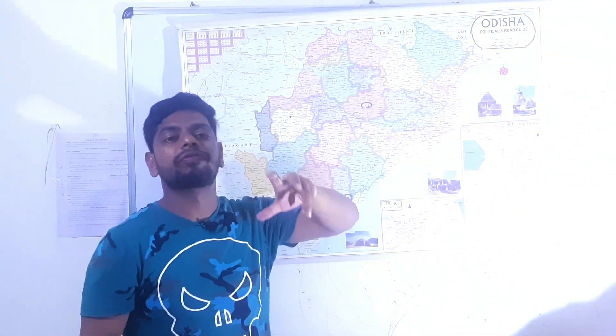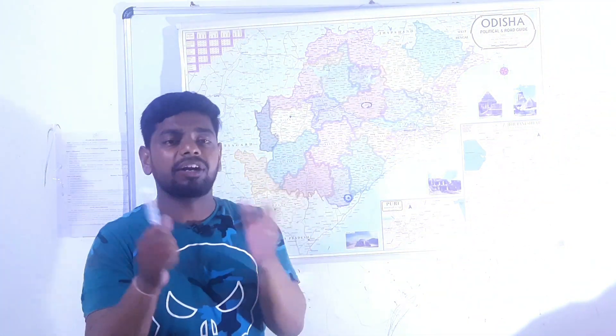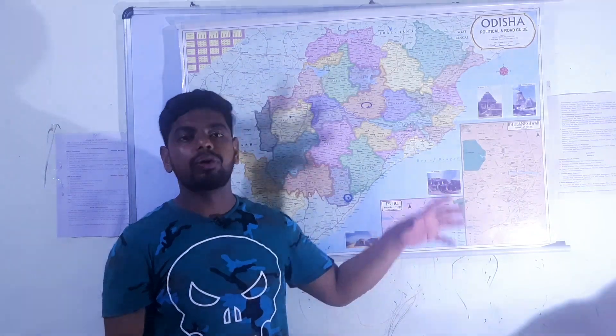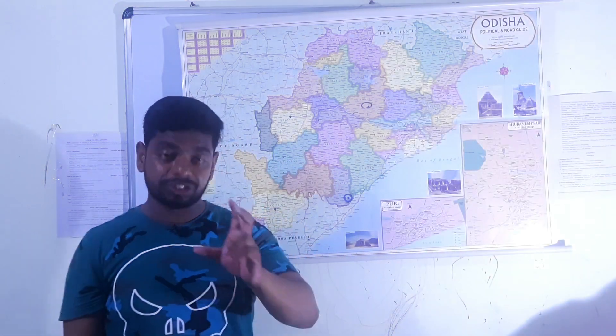Nandankanan Zoo is mainly located within a forest — specifically within certain parts of the Chandaka forest. It provides a natural habitat to both flora and fauna. Nandankanan Zoo was established in the year 1960 and is a part of the World Zoo Association.